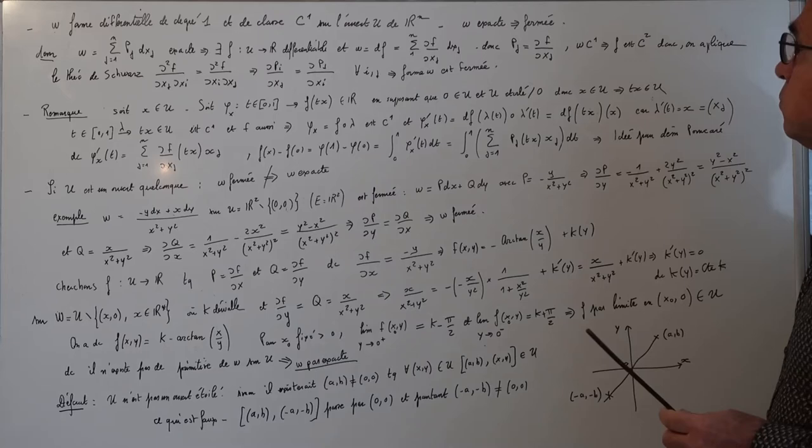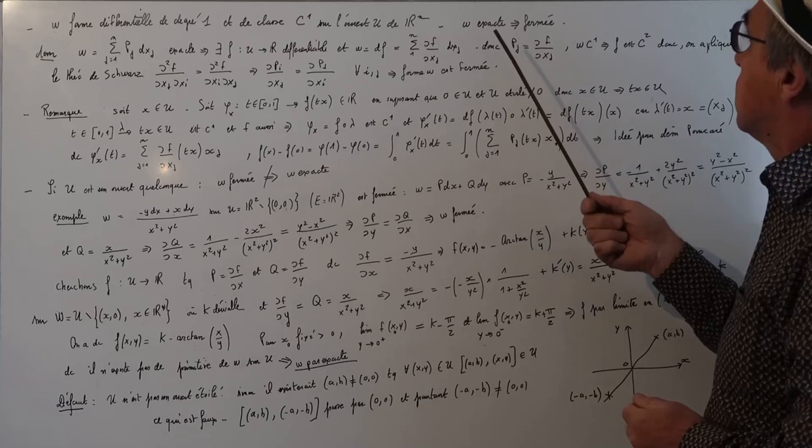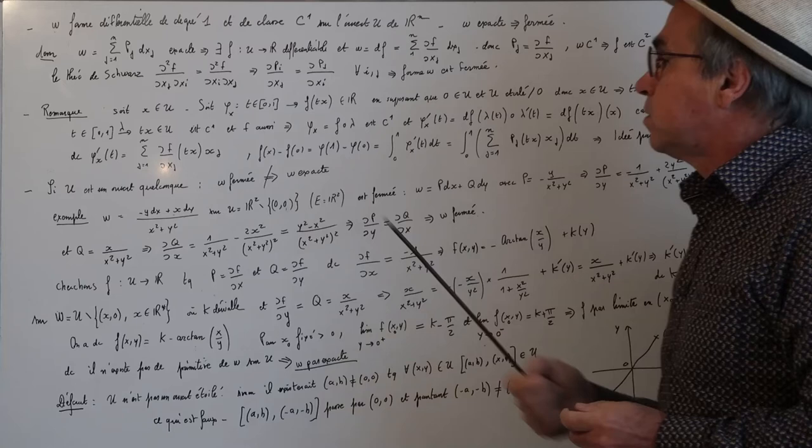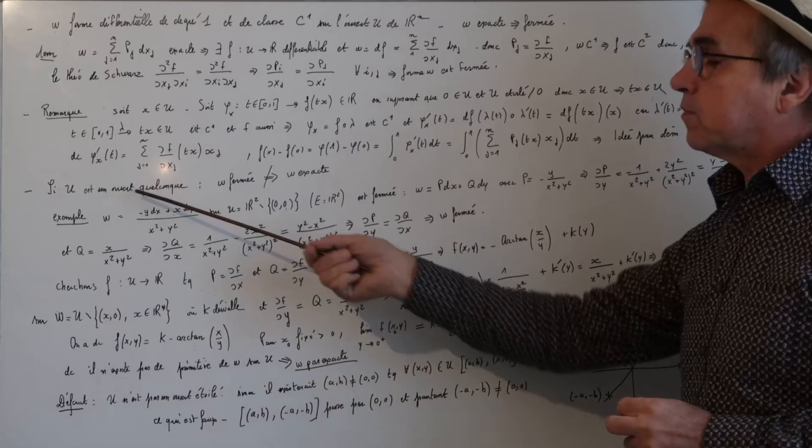En attendant ce théorème, qui dira que si l'ouvert U est étoilé et si ω est fermée, alors elle est exacte, on va donner un contre-exemple d'une forme différentielle fermée qui n'est pas exacte. On va prendre un ouvert U qui n'est pas étoilé.